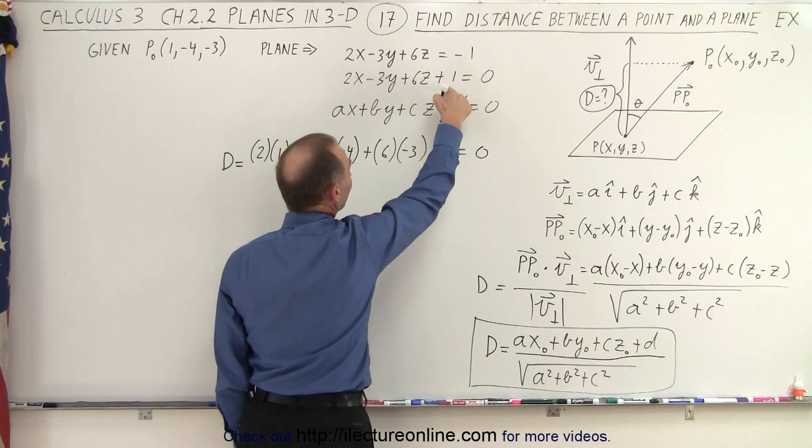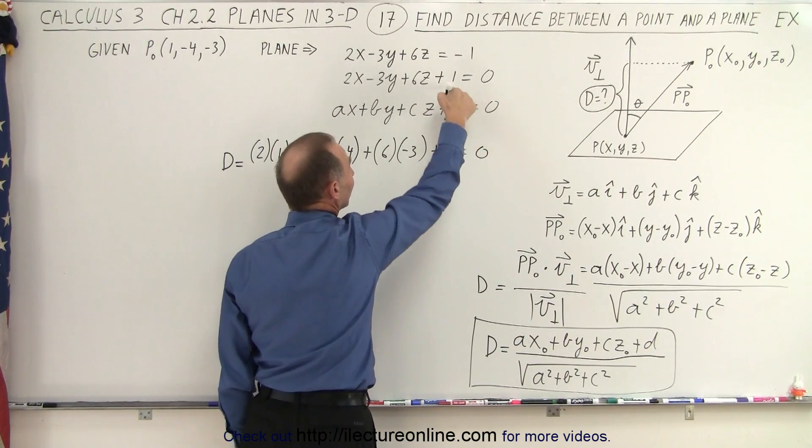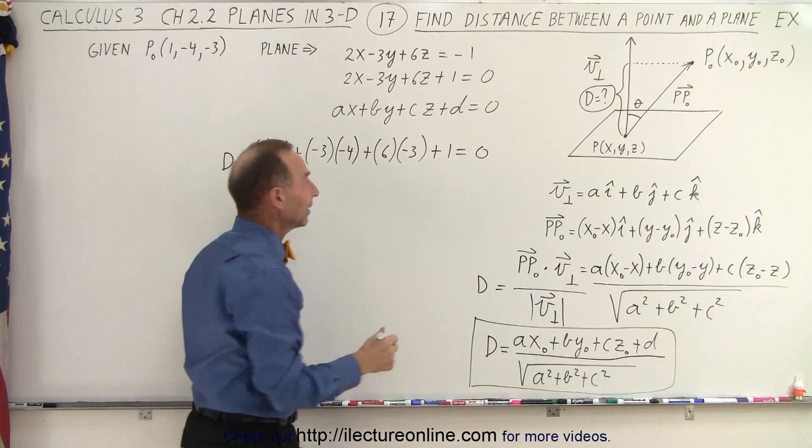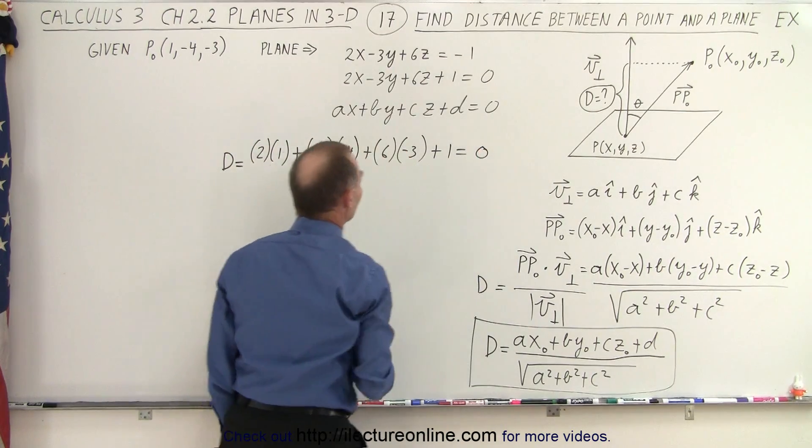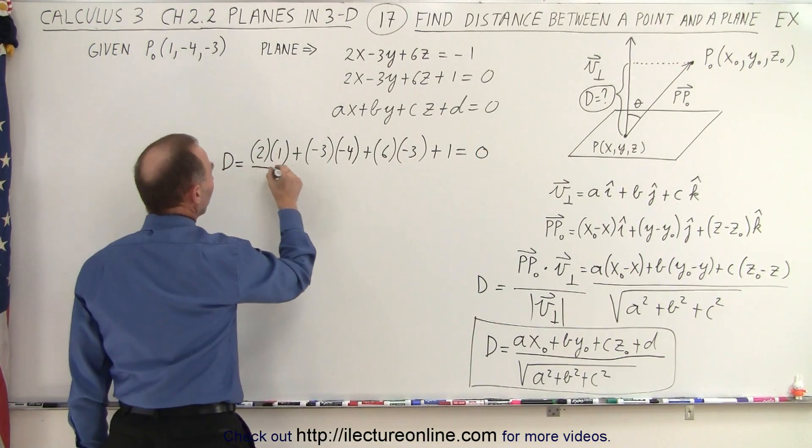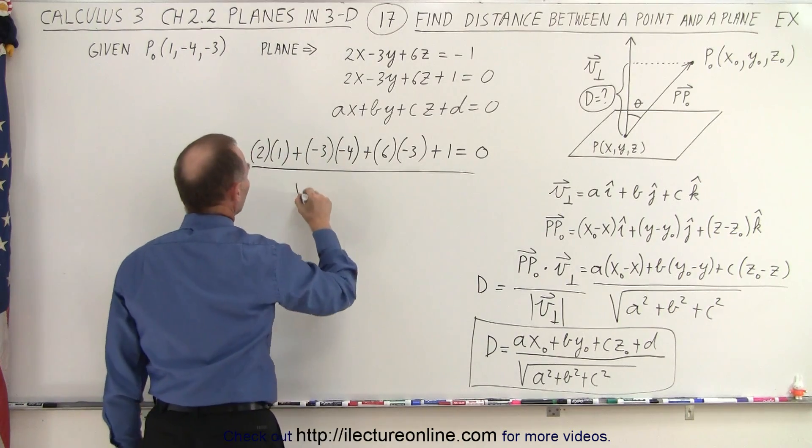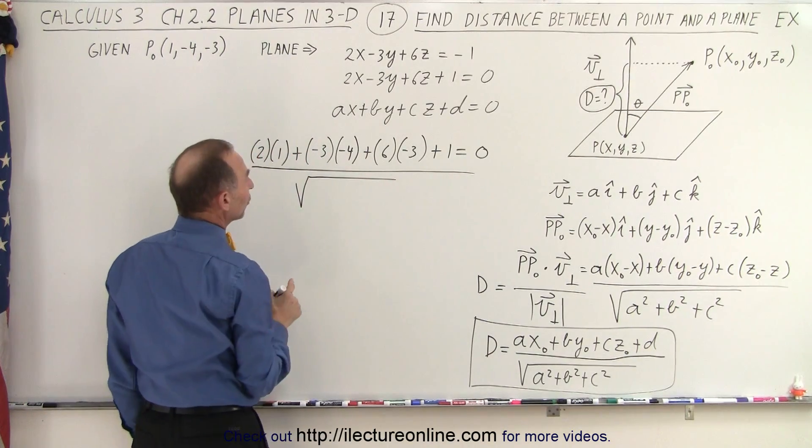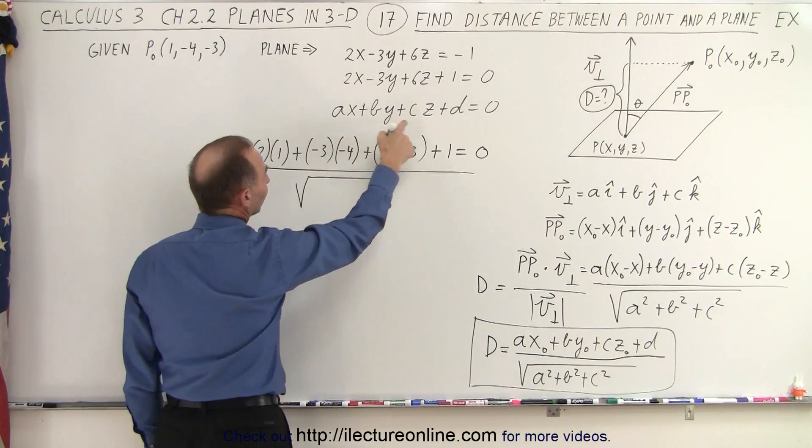So that's why you want to write it in this format so you realize the sign of d in this case is plus 1, not negative 1. And then we're going to take the whole thing and divide it by the square root of the sum of the squares of the components of the perpendicular vector a, b, and c.